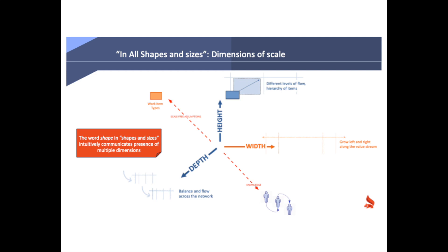Companies come in all shapes and sizes. The word 'shape' in that expression intuitively communicates that there is more to size than just a number — there are different kinds of scales, multiple dimensions are present. We're going to identify these dimensions from experience. We're presenting a model of five dimensions; each has a nature of problems different from the others. Three of them map to geometric notions of depth, width, and height, and two others are special and don't exactly fit in three-dimensional space.